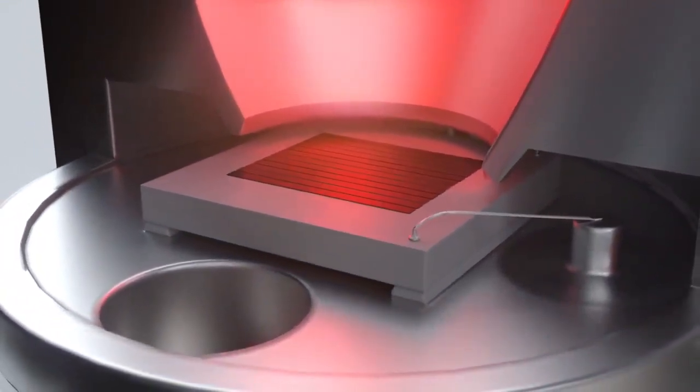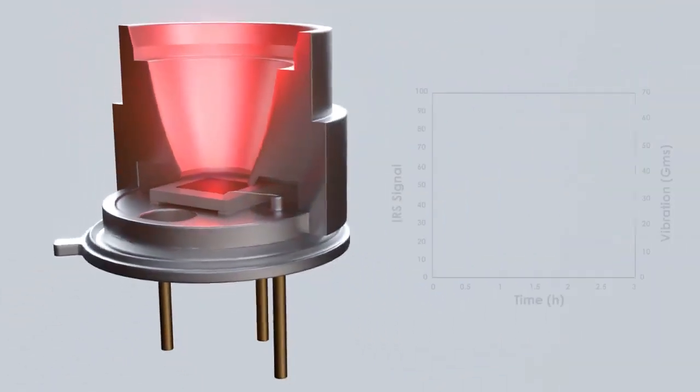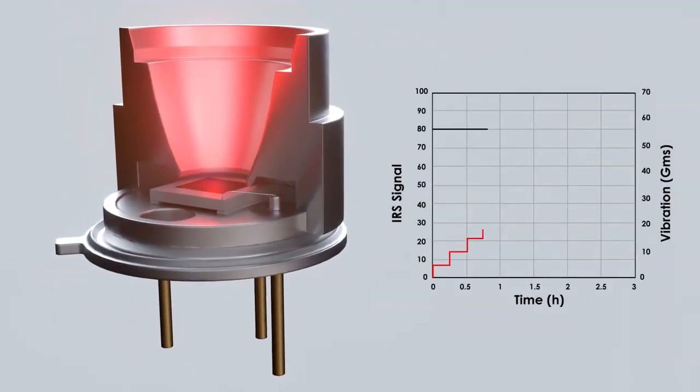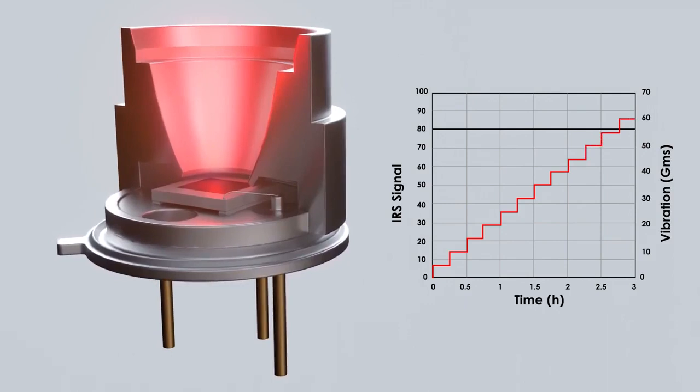Furthermore, the chip is attached to the TO header with an elastomeric adhesive, and can thus efficiently absorb vibrations. This entire design makes the Exatris infrared source extremely resistant to external disturbances.